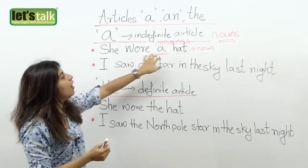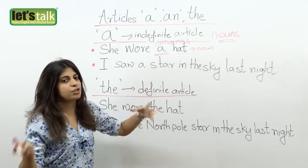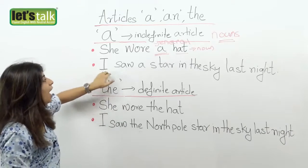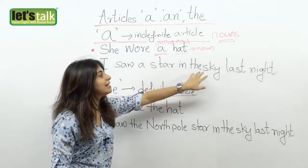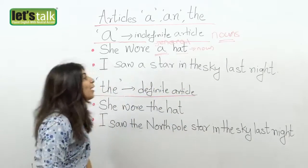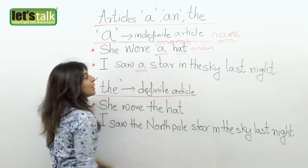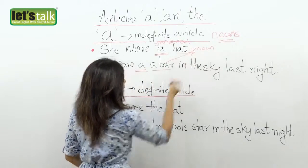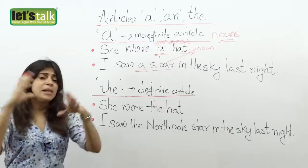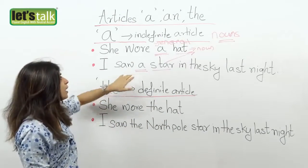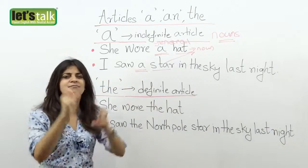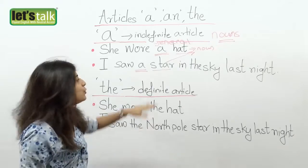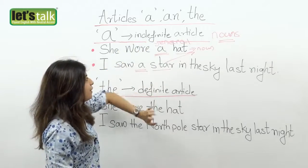So 'she wore a hat' — just a hat in general. Let's look at another sentence: 'I saw a star in the sky last night.' Here 'a' is your article and 'star' is your noun. There are millions of stars in the sky, so we say 'I saw a star' — nothing in particular, I just spotted a star. So it is an indefinite article here.